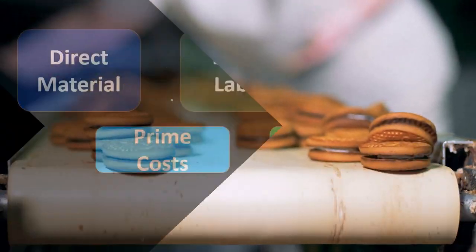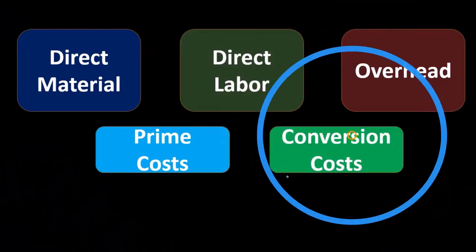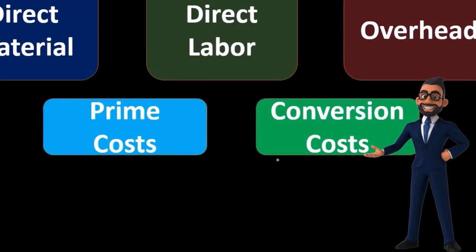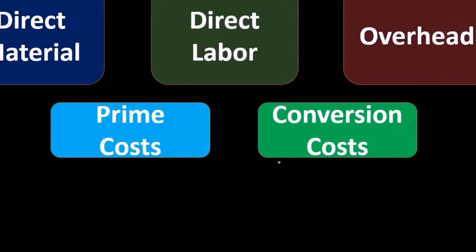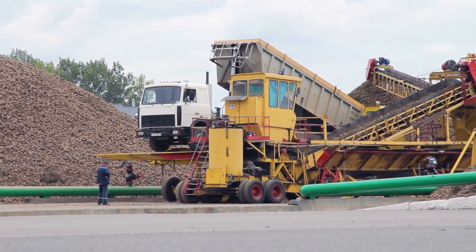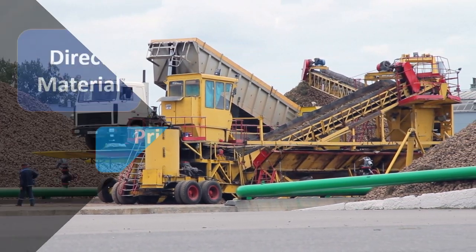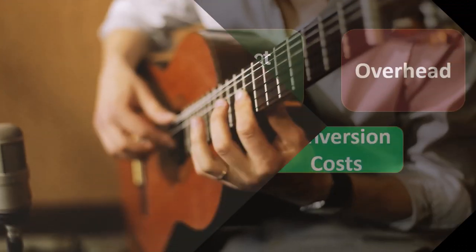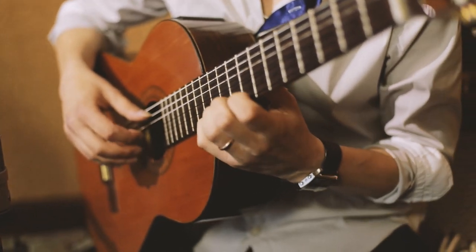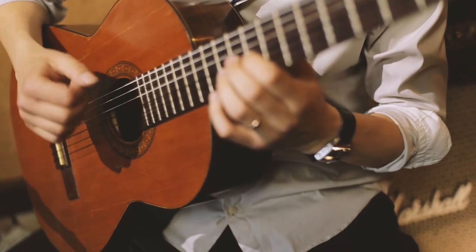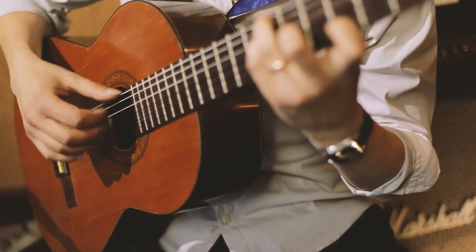Conversion costs are differentiated from prime costs, although there is some overlap. Conversion costs are the costs used to convert the raw material to the finished goods — the costs that mean we are doing something to the raw material. In the example of a guitar, the direct material would be something like the wood, and the conversion would be anything we do to that in order to make it into a guitar.